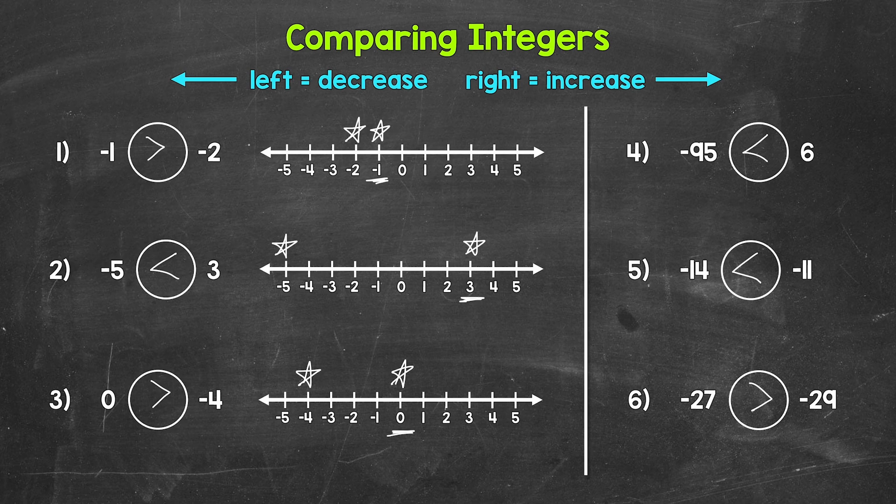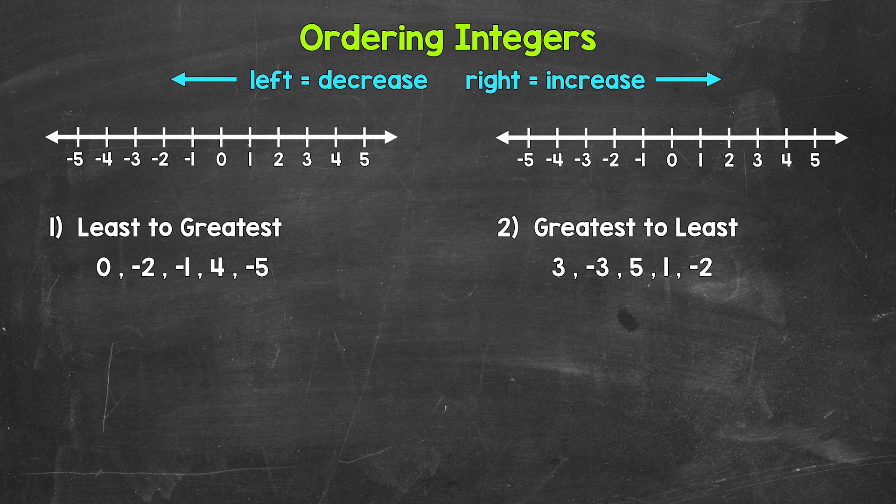So there's how to compare integers. Let's move on to ordering integers. We will go through two examples where we will use a number line to help us out, and then two more examples where we will not use a number line. Let's jump into number one, where we need to order these integers from least to greatest. We'll start by marking them on the number line.